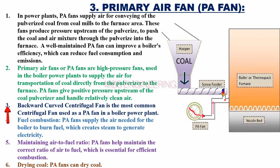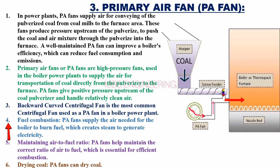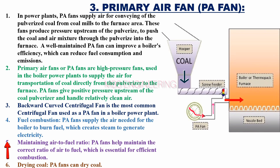The backward curved centrifugal fan is the most common centrifugal fan used as a PA fan in a boiler power plant. PA fans supply the air needed for the boiler to burn fuel, which creates steam to generate electricity. PA fans are also used to maintain the air-to-fuel ratio — they help maintain the correct ratio of air to fuel, which is essential for efficient combustion.